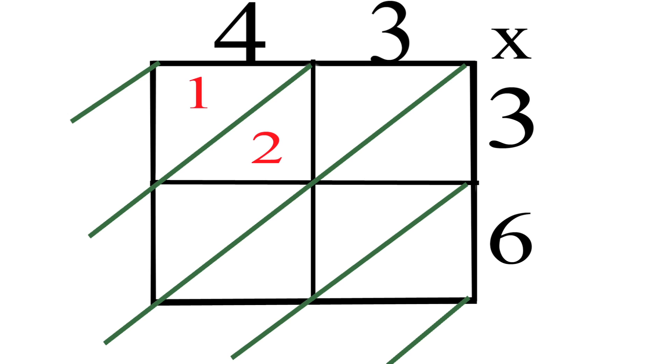Four times six is 24. Two goes on top and four goes on the bottom. Three times three equals nine. Place zero on the top